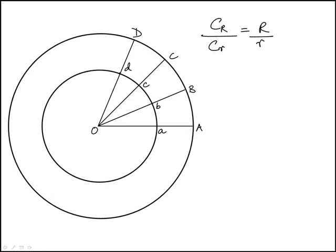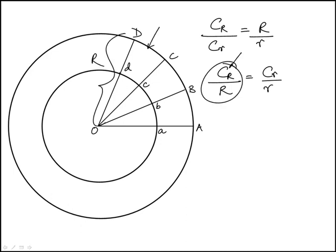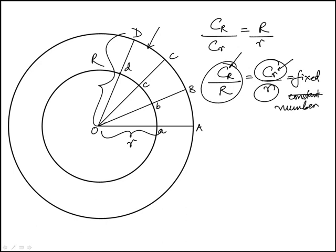And I can rewrite this as meaning that the ratio of the circumference of the larger circle with radius R is identical to the circumference of the smaller circle over its radius, meaning this is a fixed quantity. It doesn't tell me what that fixed quantity is. I should say fixed number, just synonymous with a constant.